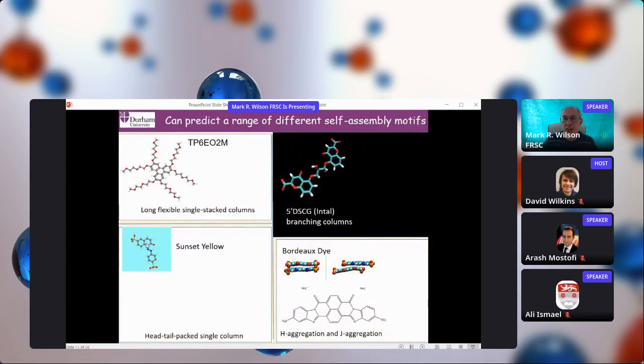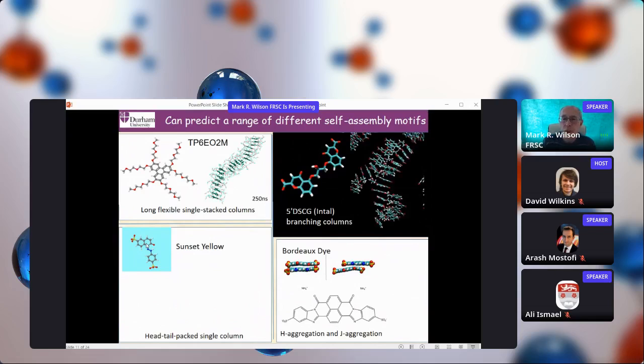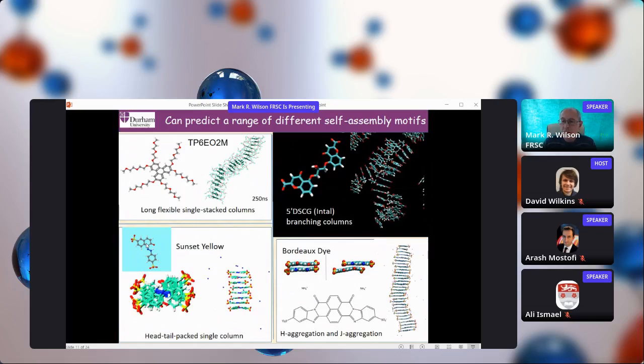We've actually seen a whole range of rather interesting aggregation behavior in solution. You can get long flexible single aggregates, you can get systems which form branching columns so that you get almost fractal behavior, you can get the H aggregates that you've seen, and you can get systems where we have a complex mixture of both H and J aggregation in solution.